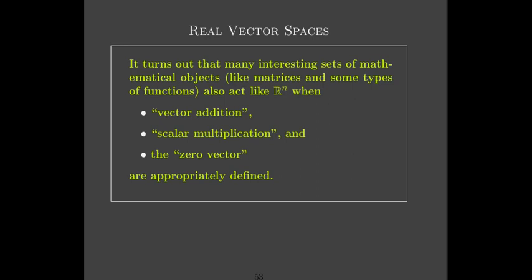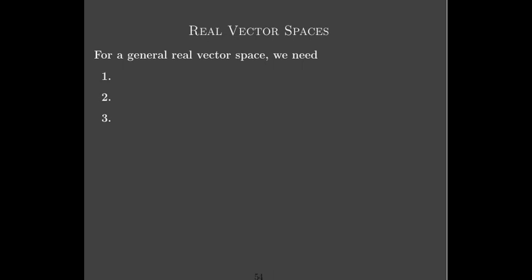There are many other objects that also act like Euclidean space Rn, including functions in general, polynomials of a specific degree or less, or specific sets of functions and their spans. Sometimes we have to be careful about how we define vector addition, scalar multiplication, and the zero vector.